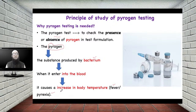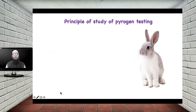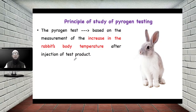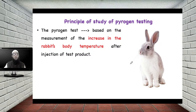This is the basic principle behind pyrogen testing. The pyrogen test is based on the measurement of the increase in rabbit body temperature after injection of the test product. We give the injection to the rabbit and observe for an increase in body temperature. If there is an increase, it means the formulation contains pyrogen. If there is no increase, it means it does not contain pyrogen. There are certain criteria based on how much the temperature has increased, which we will see later.